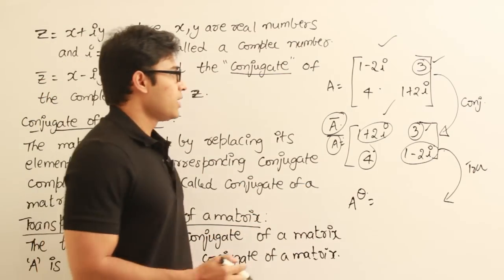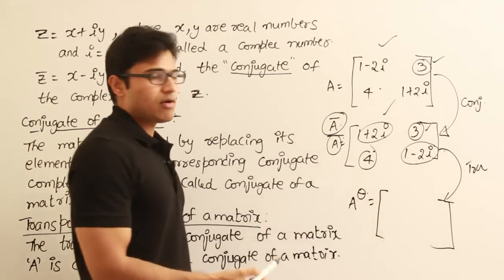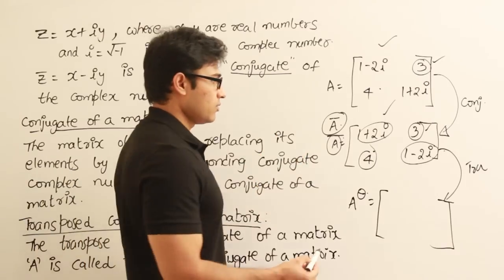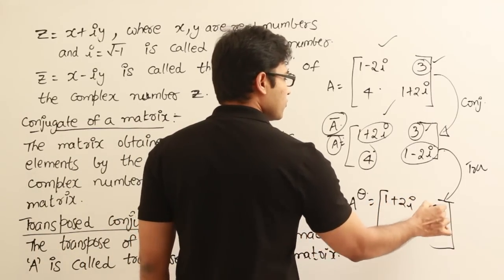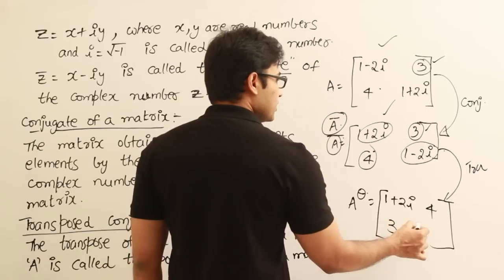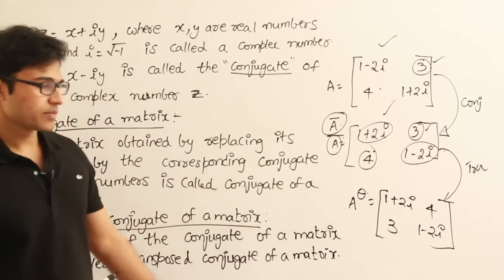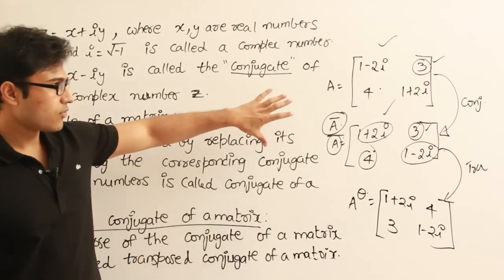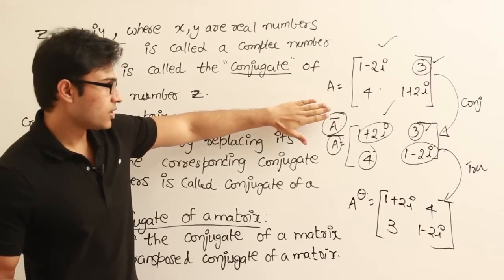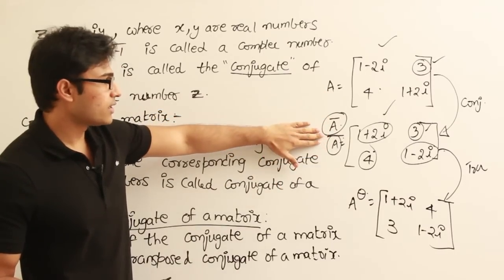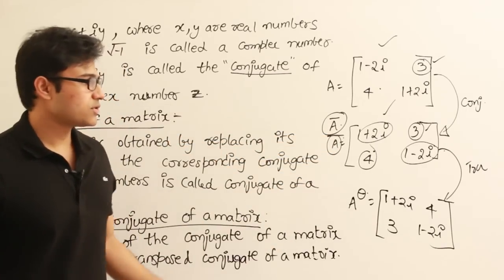For A to the power theta, I have already found out the conjugate. Now if I find out the transpose of it, it is going to be 1 plus 2i, 4, 3, 1 minus 2i — replacing the rows by columns. So if I replace all elements with their conjugate numbers I get the conjugate matrix, and then if I take the transpose of it I get the transposed conjugate of the matrix.